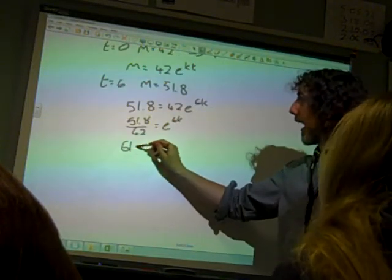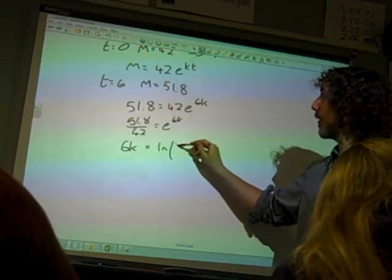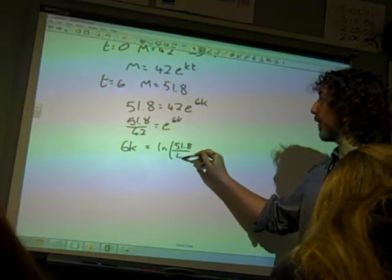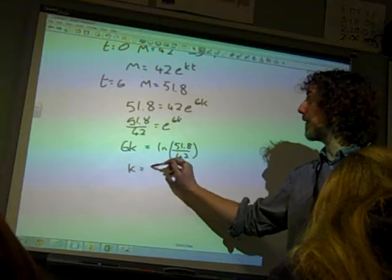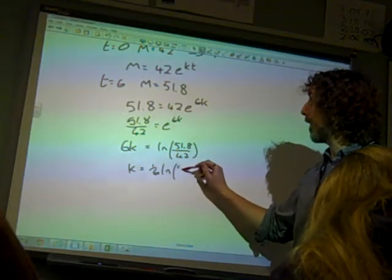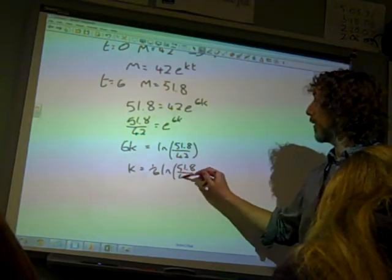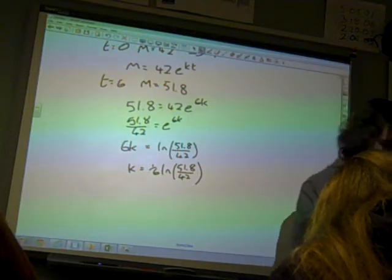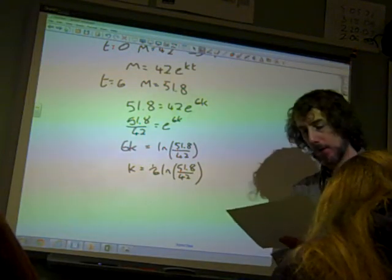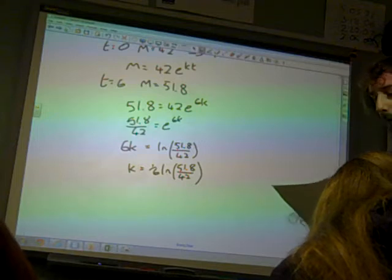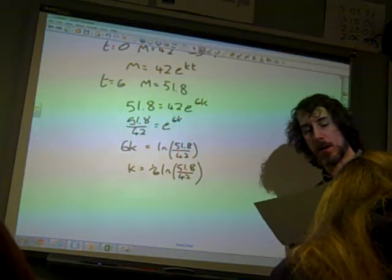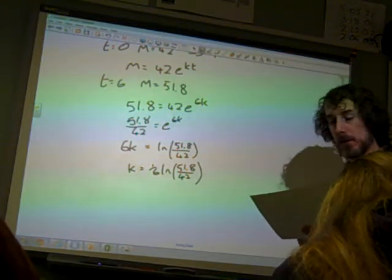So, 6k is the natural log of 51.8 over 42. So, k is a sixth ln 51.8 over 42, which is, it's on here, 0.035, 0.03495. Okay.